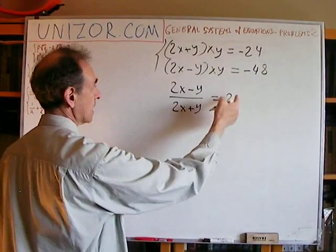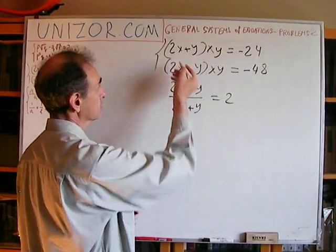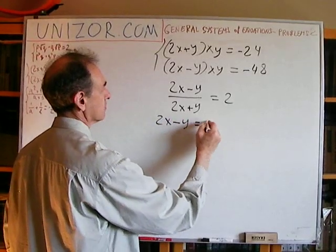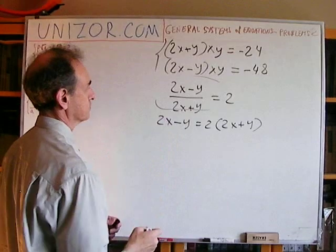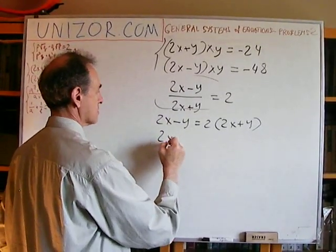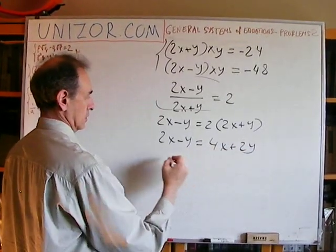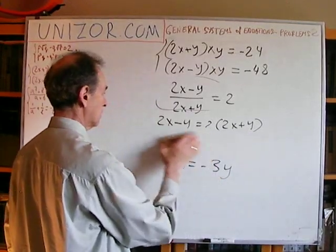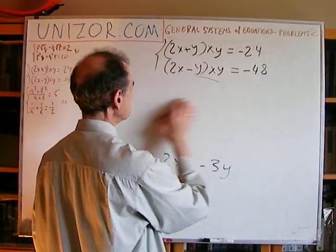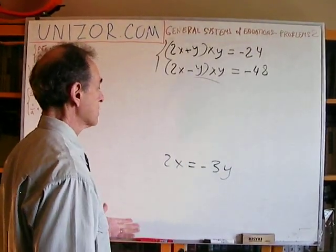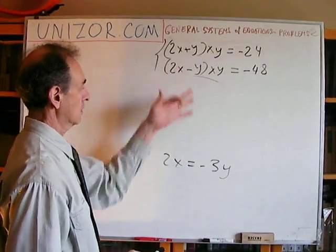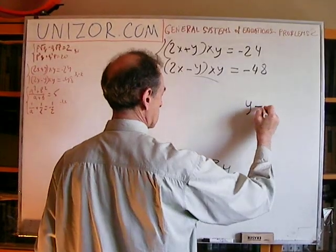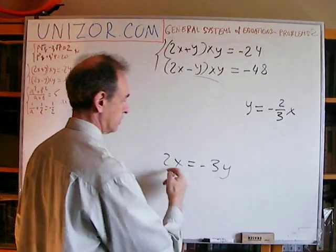This is much easier because it's now a linear relationship. Since 2X plus Y is not zero, I can safely write: 2X minus Y equals 2 times (2X plus Y), which gives 2X minus Y equals 4X plus 2Y, so 2X equals minus 3Y. And therefore Y equals minus two-thirds of X.